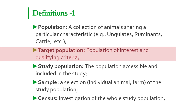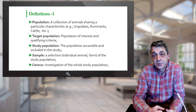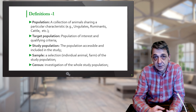Target population is the population of interest. For example, if we have tuberculosis and brucellosis, we have different populations of interest. In the first case, for tuberculosis, the population of interest is all cattle which are older than 42 or 60 days. And for brucellosis, the population of interest is all cattle which are older than 6 months.